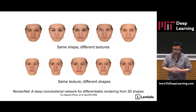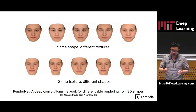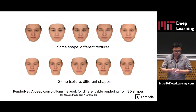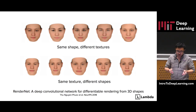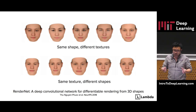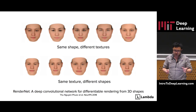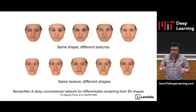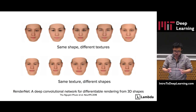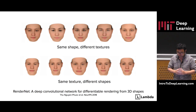As a fun experiment, we try to mix and match the shape and the texture. The images in the first row are rendered with the same shape input voxels but different texture voxels. The second row is rendered with the same texture but different shapes.